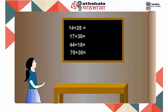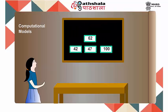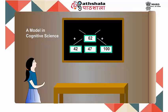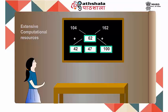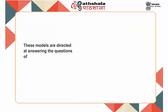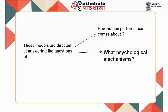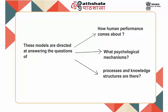We can use models to solve problems of other kinds — these models are called computational models. A model in cognitive science that requires extensive computational resources to study the behavior of a complex system by computer simulation is called a computational cognitive model. These models are directed at answering the questions of how human performance comes about, and what psychological mechanisms, processes, and knowledge structures are involved.